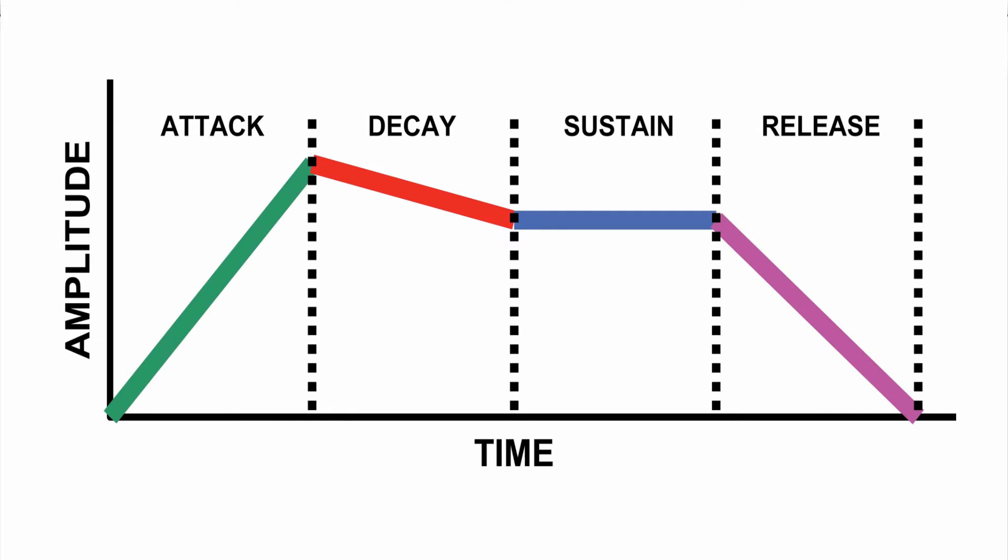To add a decay period to any note that we're playing on a synthesizer, we have to add two things. First of all, the amount of time or the amount of beats that we want this decay to happen over. And then the level that we want the note to actually sustain at.